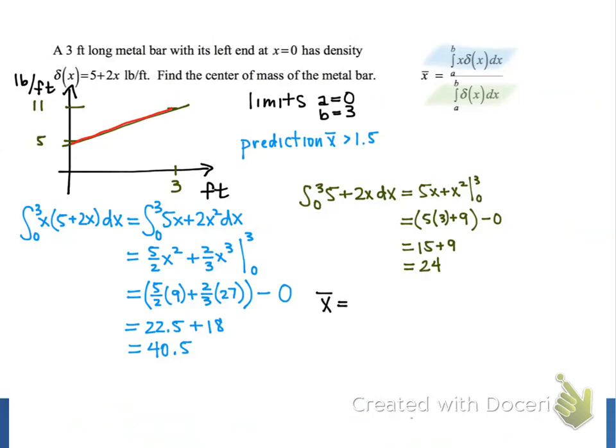So to calculate x bar, the center of mass of the bar, we take our numerator, 40.5, and we divide it by 24. And this is equal to 1.6875. The units on this result are feet, and this is calculated from the left end of the bar. Our result is larger than 1.5 feet, and so that matches our early prediction that it would be to the right of the center of the bar.